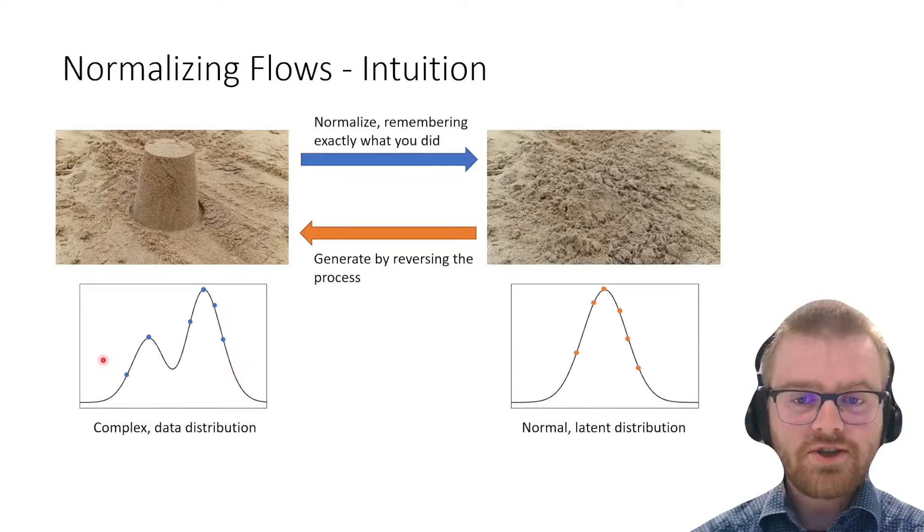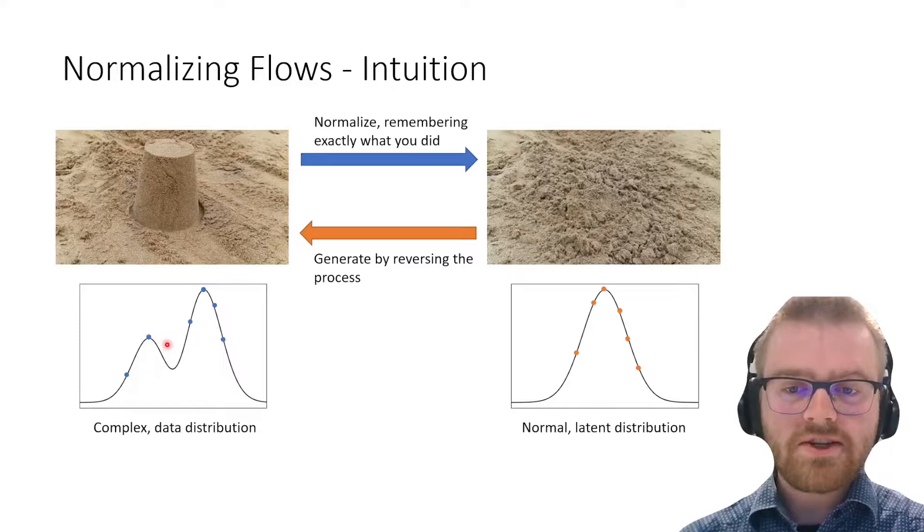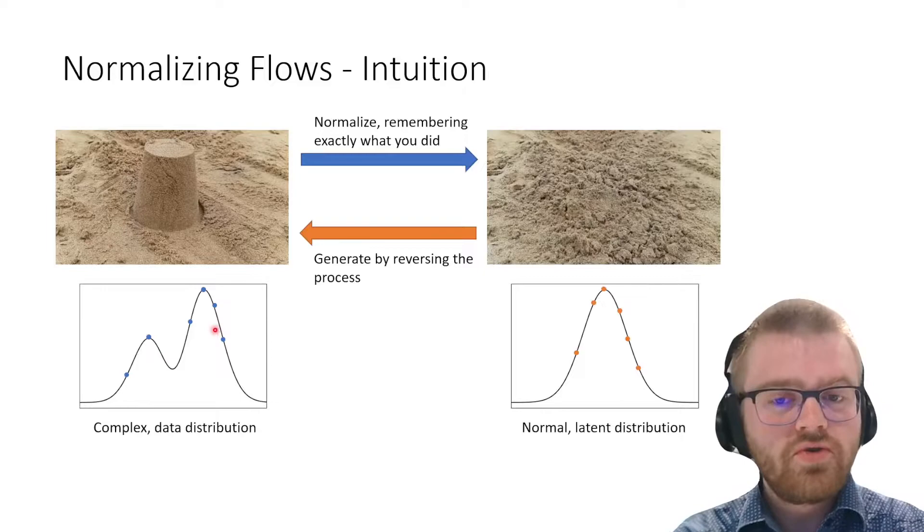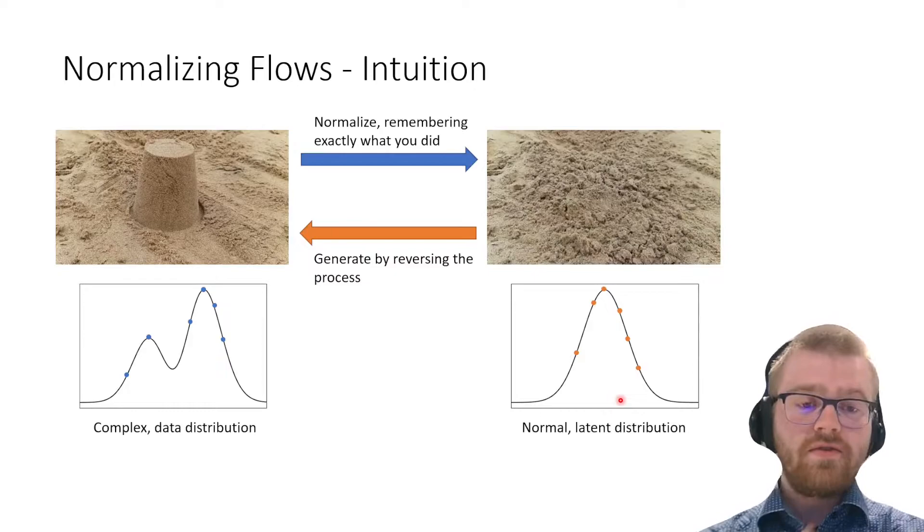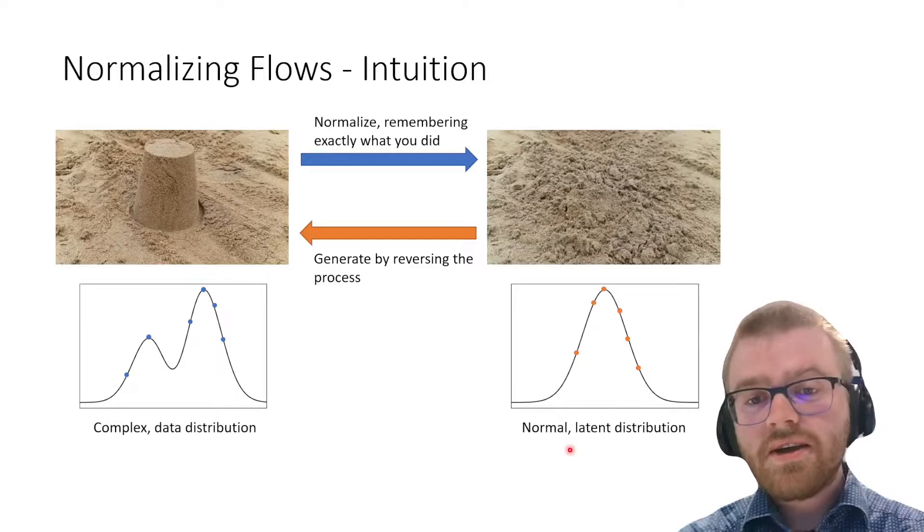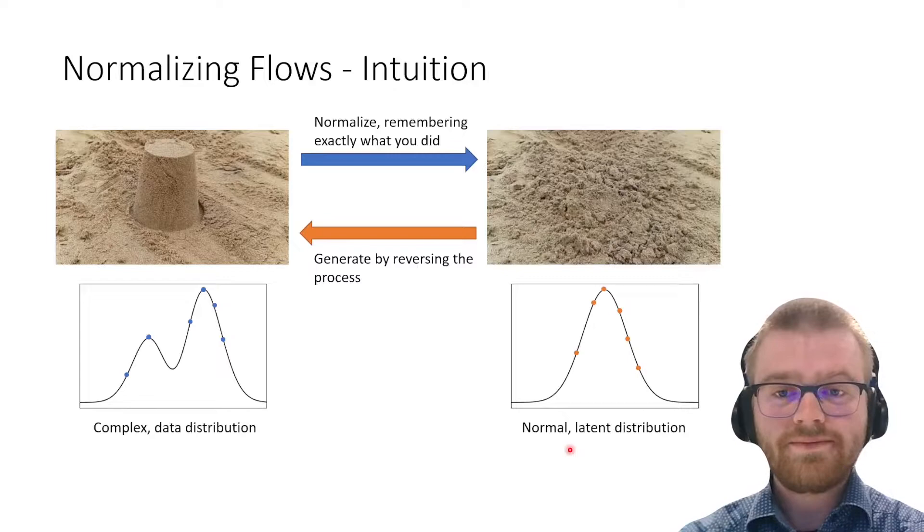In terms of probability distributions, on the left we have a complex data distribution, p of x, with some examples. We learn to normalize these points to a latent normal distribution. Now we can sample from this latent distribution and generate backwards to create new points in the data distribution domain.